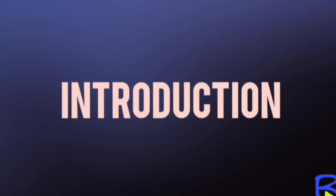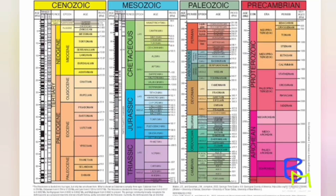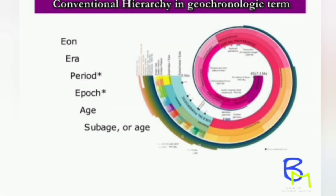The geological timescale is a system used by geologists and paleontologists to describe the timing and relationships of events in Earth's history. It organizes Earth's history into various intervals based on significant geological and biological events. Understanding this scale is crucial for studying the evolution of life and the Earth's physical development. The geological timescale is divided into eons, which are further divided into eras, each containing distinct periods that reflect the evolution and extinction of various life forms.